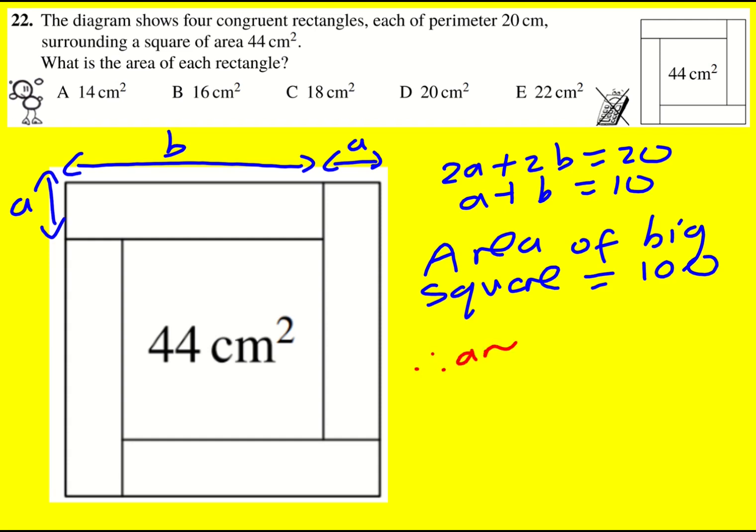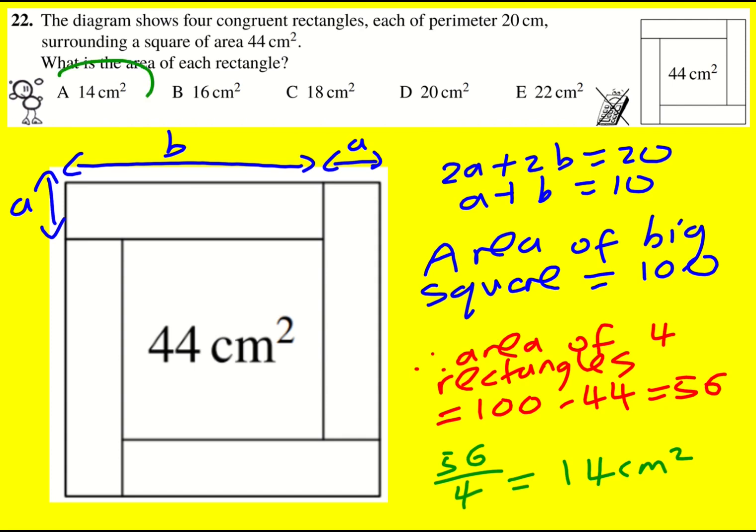And therefore the area of the four rectangles is going to be the difference between 100 and 44. And then we can just divide through by 4. 56 divided by 4, which gives 14. So that's the answer. Neat method.